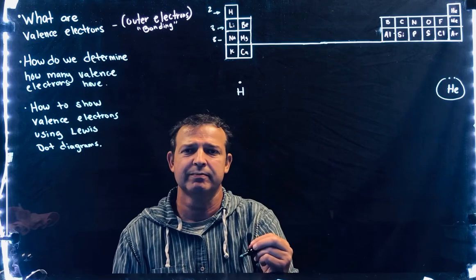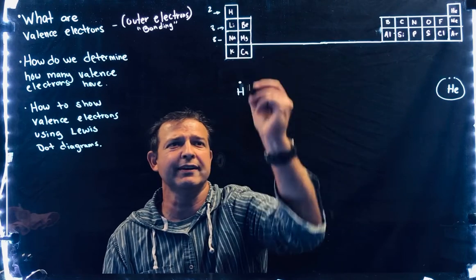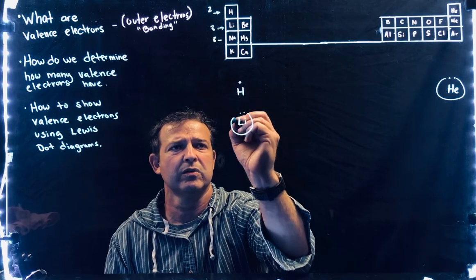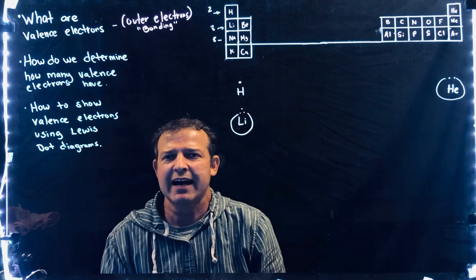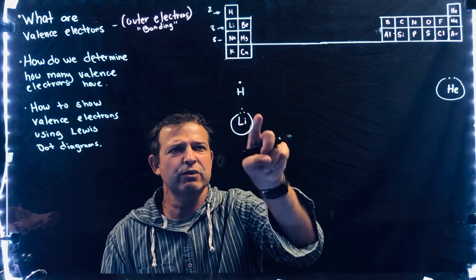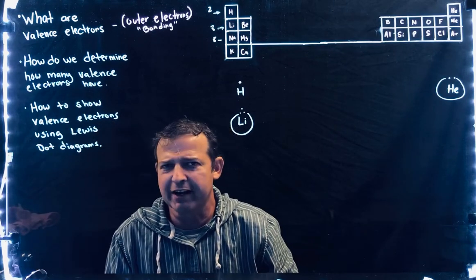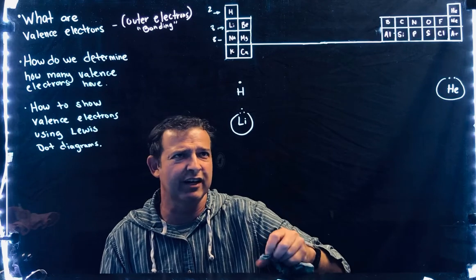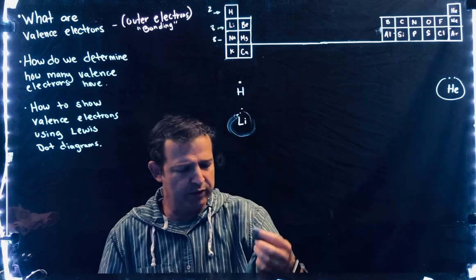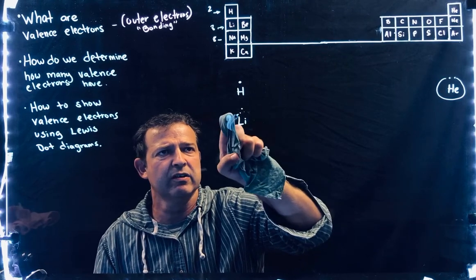Going back to lithium — it has three electrons total. When you do the Lewis dot, though, you don't draw those inner electrons, because they aren't used in bonding. Lithium has two inner electrons; we know they're there, but we don't draw them when dealing with bonding or doing the Lewis dot. So lithium has one valence electron.